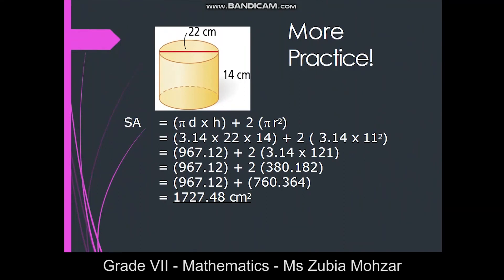Now look at this next example. The dimensions are the same, but in this case they have used d. Instead of writing 2πr, they use πd — because d equals 2 times the radius. So in this example they have used the formula πd times height plus 2πr². By substituting the values, you will get your answer. Students, don't forget to write the unit. Since the unit of length is cm, the surface area will be in cm².